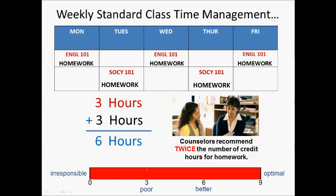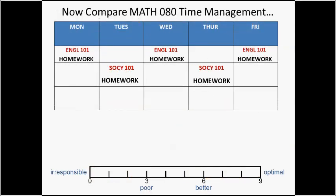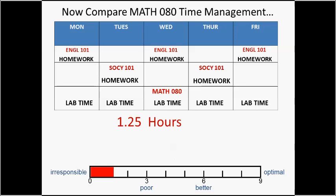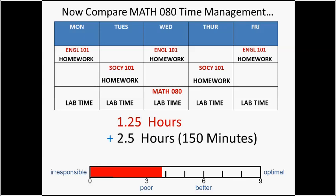Here comes the big kicker. Let's compare the classes we just looked at to our Math 80 time management situation. Your Math 80 class is only scheduled to meet once a week for an hour and 15 minutes. Look at our thermometer in comparison — it only goes up to here. If that is all you do, you are being absolutely irresponsible. Even if you spend the recommended 150 additional minutes in the lab — the two and a half hours per week — you'll still be in the poor range of the thermometer.